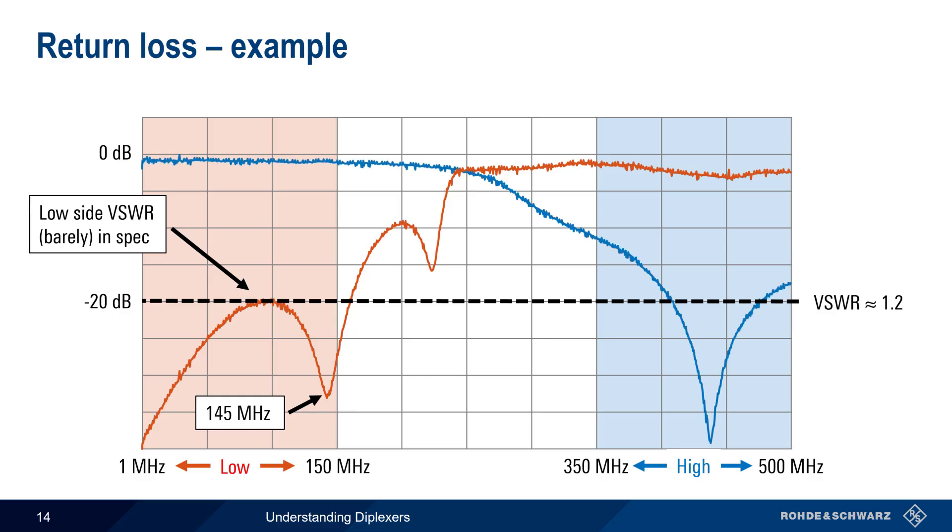On the high side, we notice that VSWR is actually not in spec over the first 50 MHz or so of the high side frequency range, although there is a sharp notch in return loss around 445 MHz, and this means excellent VSWR around this frequency.